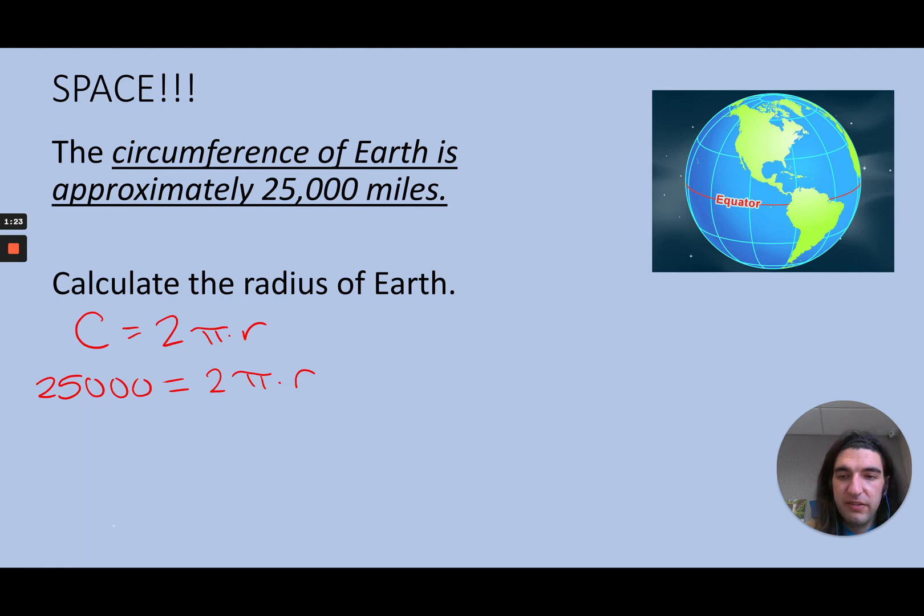Well, let's see, how do I undo a times 2 here? I'm just going to divide everything by 2, so that'll be 12,500 is π times r. Now to solve for r, to get that by itself, I need to undo a times π, and I can do that by dividing by π. So I get the radius is 3,978.9 miles.